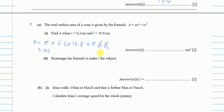Just use your calculator and you will get 331.12 and so on. To 3 significant figures it will be 331.